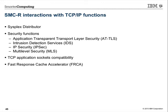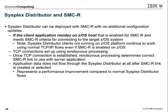Chart 45 covers interactions with TCP functions — how SMCR integrates with z/OS TCP/IP quality-of-service features like SysPlex Distributor, security functions like AT-TLS, IDS, IP security, and MLS. TCP applications have full socket compatibility — socket calls over the existing APIs are supported relative to SMCR.